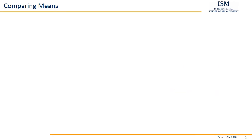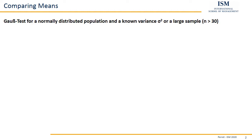We start by considering the Gauss test. We assume we have a normally distributed population and we know our variance or the corresponding standard deviation. If we just have a large sample, we could calculate our corrected variance and then do the same test — but this only works for large samples, so at least 30, or better even more observations. We get an approach here for two-sided tests.